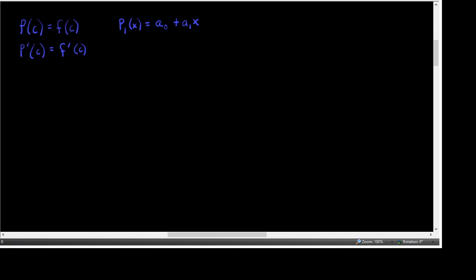Let's do an example where we're going to start out with a function that we're trying to approximate with a polynomial. E to the X is a good one to do this for. We're trying to find, first of all, a linear polynomial that would be a good estimate of what E to the X does. We're going to need to know F prime, which — E to the X is the coolest function ever — it is its own derivative.